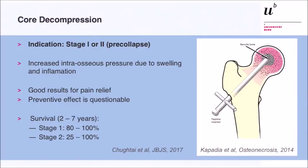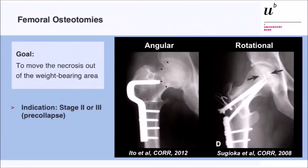The most commonly performed procedure in the Western world is core decompression, indicated in early pre-collapse stages. In Asian countries, where avascular necrosis is very frequent, it's rarely performed — they prefer femoral osteotomies. It's thought that inflammation and necrosis lead to increased intraosseous pressure, and decompression through a lateral drill hole — either by a trephine or multiple drilling — releases this pressure. It provides good pain relief, but its prevention of collapse is very questionable. Survivorship of the joint is 80 to 100% for stage one, with a wide range of 25 to 100% for stage two.